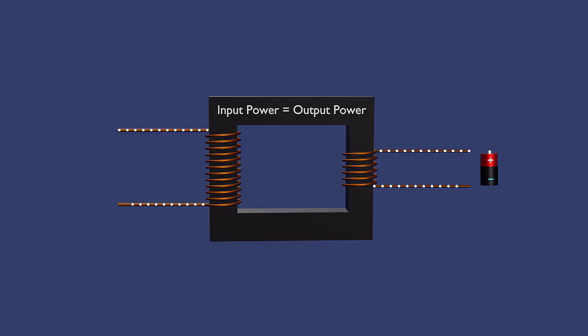In an ideal transformer, with no energy loss, the input and output power are equal. It is the product of current and voltage.